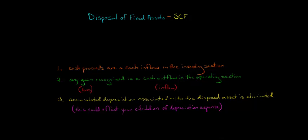In this video, we're going to talk about how to account for a disposal of a fixed asset on the statement of cash flows. First of all, when we talk about a disposal of a fixed asset, we're talking about if the company were to sell a machine or a building or some kind of property, plant, and equipment, and potentially has a gain or loss.